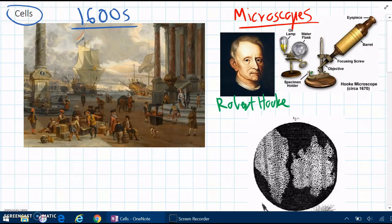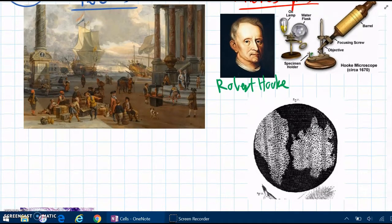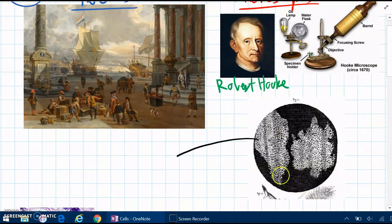And he used a microscope to look at living things for the first time. Because before this, all they knew about living things is what they could see with their own eyes. And we didn't really know what was making up the bodies of animals or the organs of plants. And when he started looking at living things, this is the kind of picture that he saw.